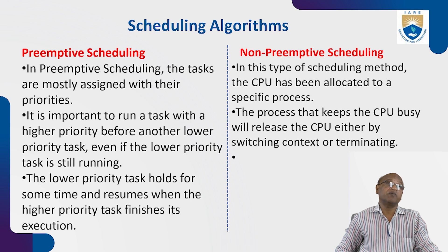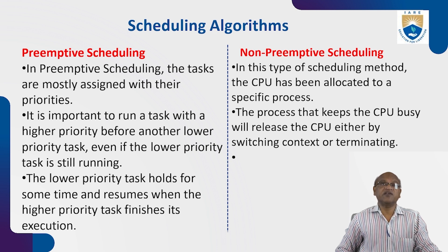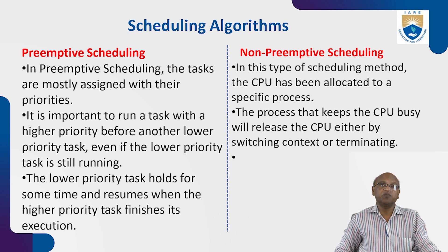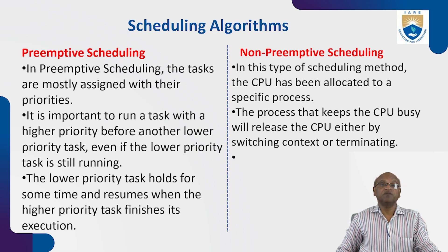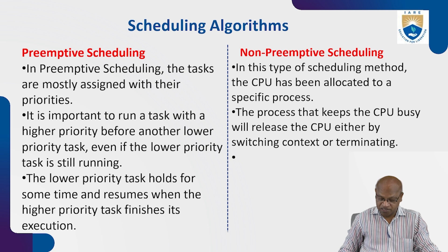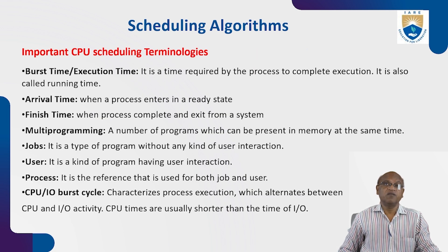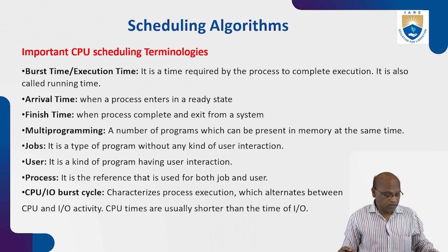The low-priority task holds for some time and resumes when the high-priority task finishes its execution. In non-preemptive scheduling, once the CPU has been allocated to a specific process, it will continue until it terminates or goes to the waiting state. Once a process is running in the CPU, you cannot stop it — the process releases the CPU either by switching context (changing state from running to waiting) or by terminating. We will discuss the set of CPU scheduling algorithms in the next class.